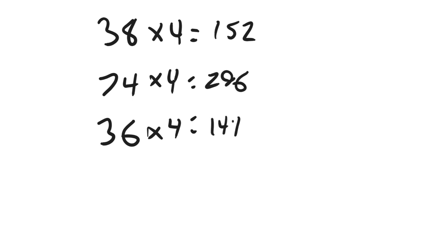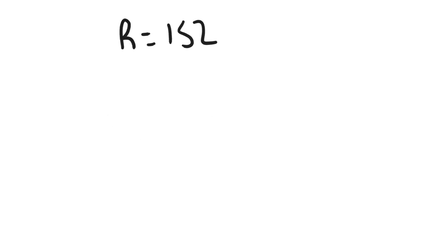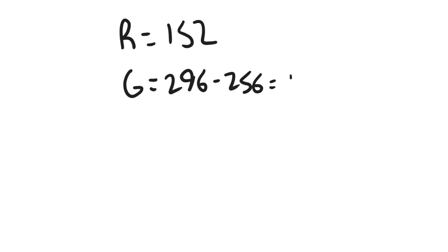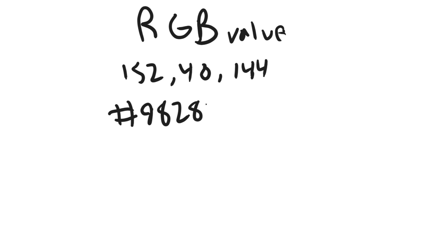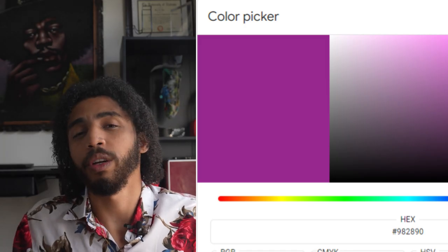This serves as a perfect example to showcase the rules of the equation. The red value is unchanged since it didn't exceed 255, so it stays at 152. The green value did exceed 255, so we subtract 296 by 256, which results in a new green value of 40. For blue, just like red, it didn't exceed 255, so it stays at 144. This gives us an RGB value of 152, 40, and 144 — or in hexadecimal, 98, 28, 90, which is similar to a dark orchid.